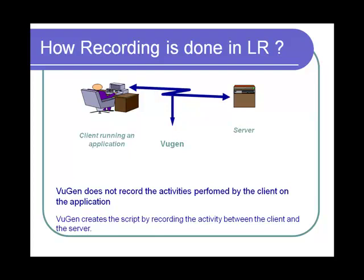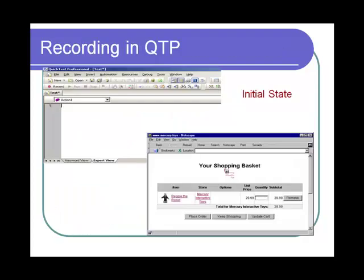To understand the concept better, let's observe and compare how client actions are recorded in QTP, a flagship functional testing tool, and LoadRunner. The task at hand is to enter a quantity of 1 in the shopping cart of a web retailer and click the button 'Place Order' to complete the order process.